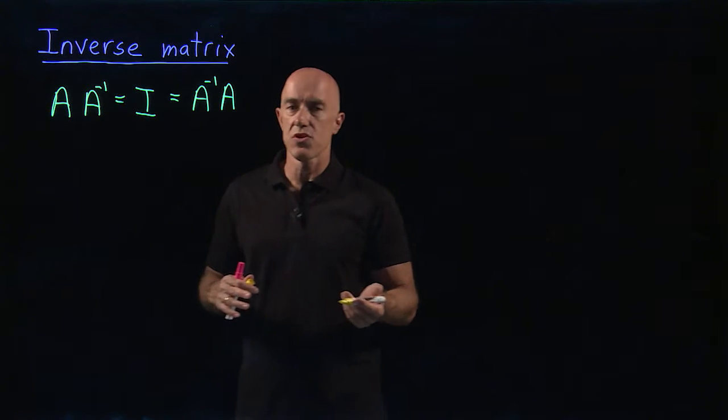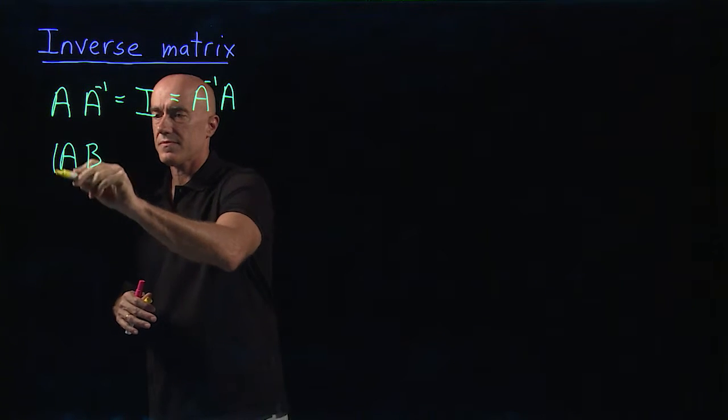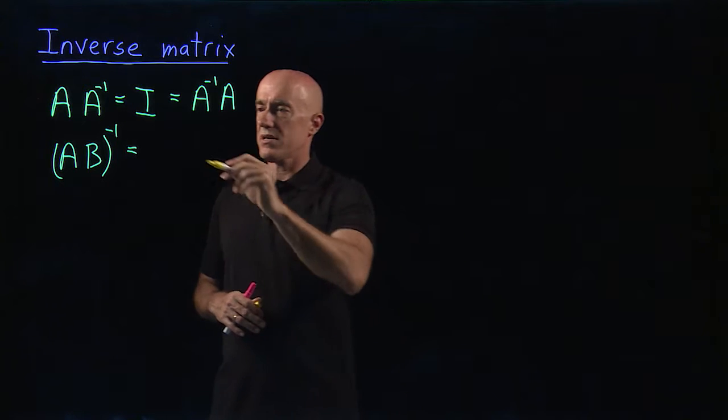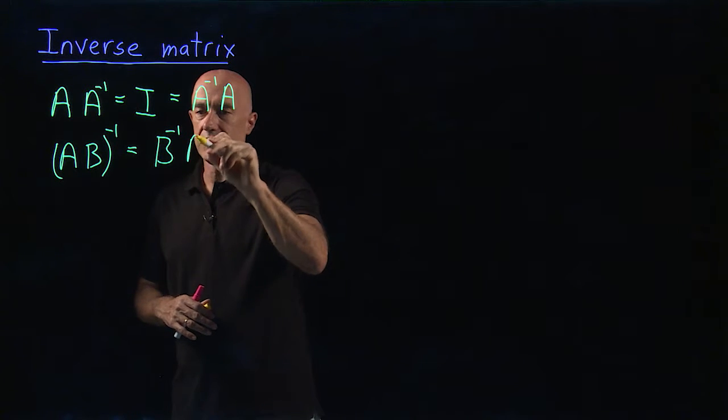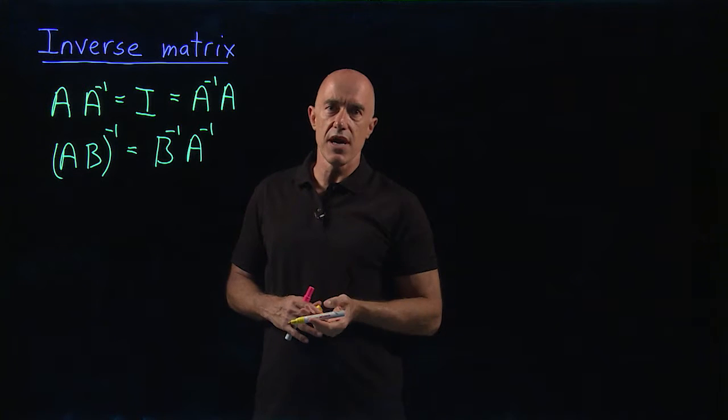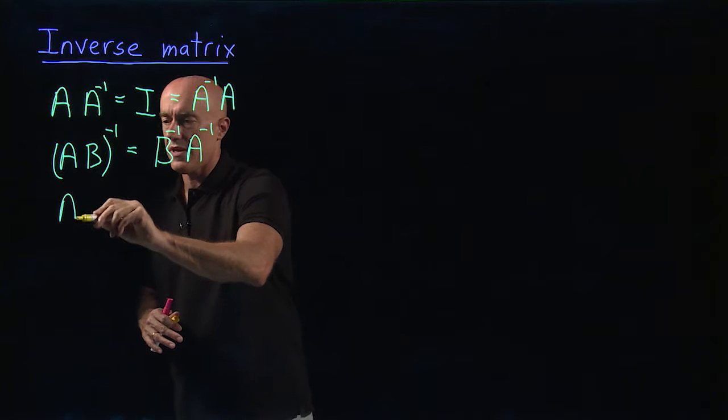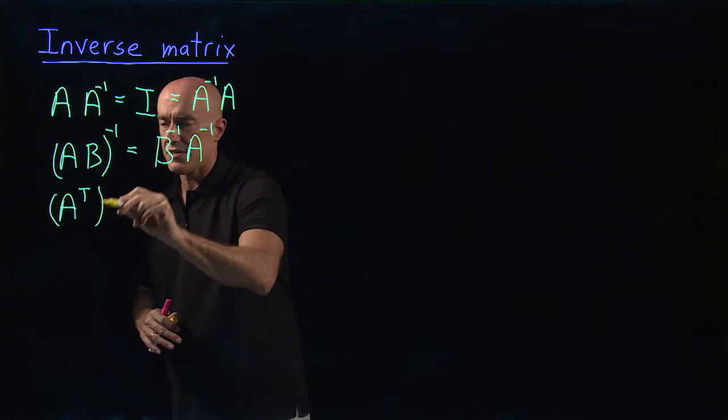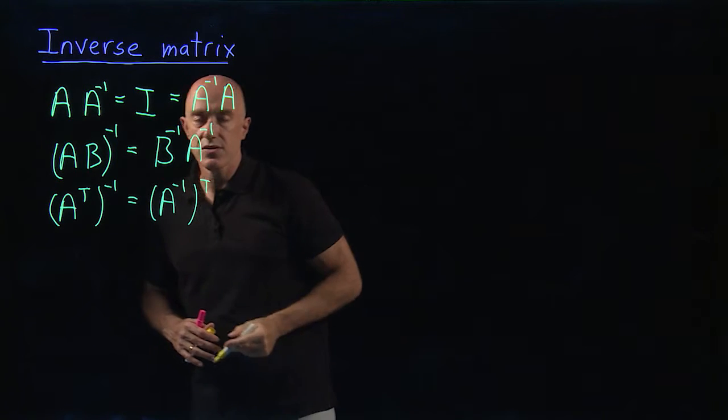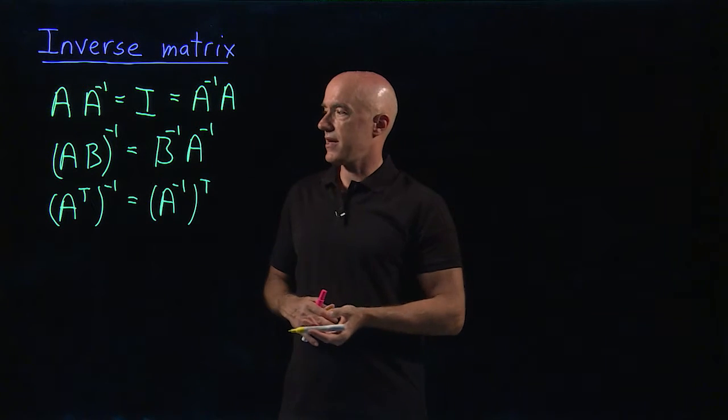So there are some certain relationships. If you have the product of two invertible square matrices and you want to find the inverse of that, this works similar to the way that the transpose works. This is B inverse times A inverse. It's a relatively simple proof and I'm going to leave it to you guys for an exercise. The other one is what if you're looking for the inverse of the transpose matrix? This is the inverse matrix transpose. So that's another fact or theorem that I'll leave it to you to do in the exercises.